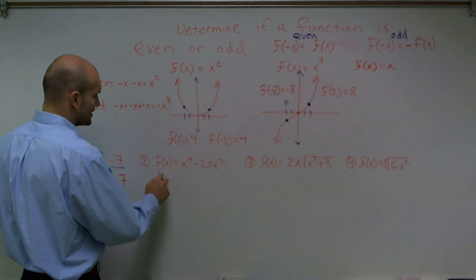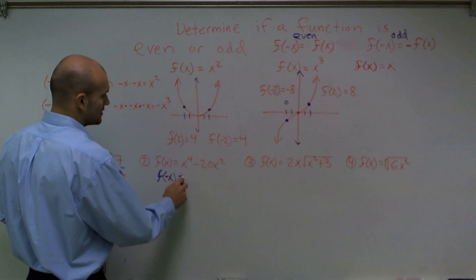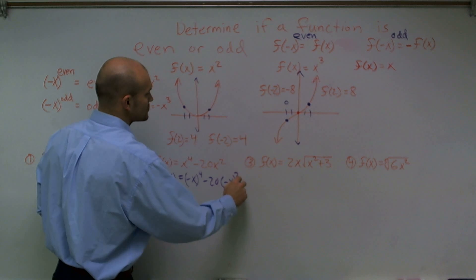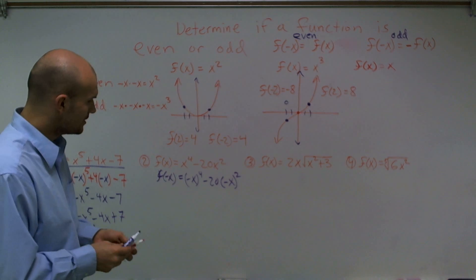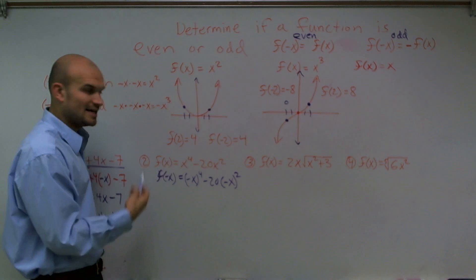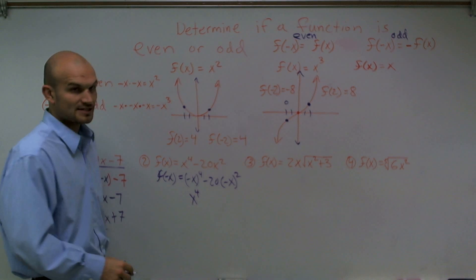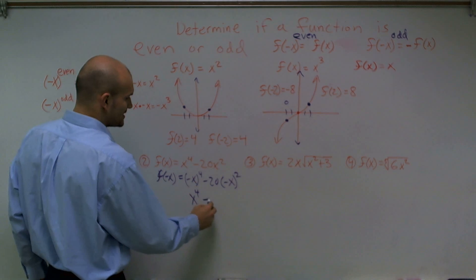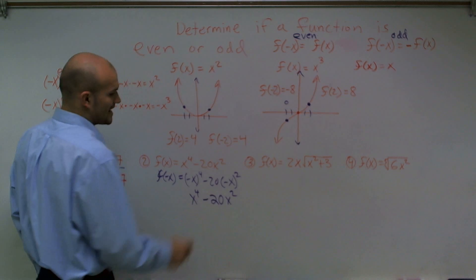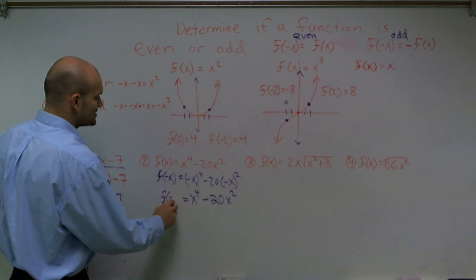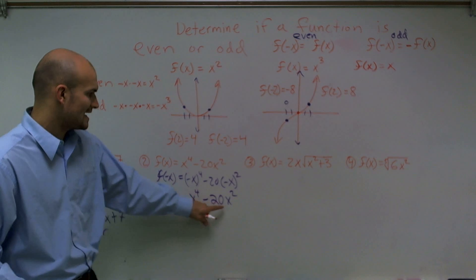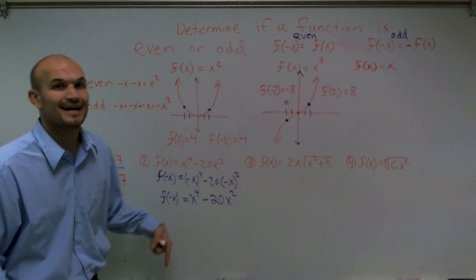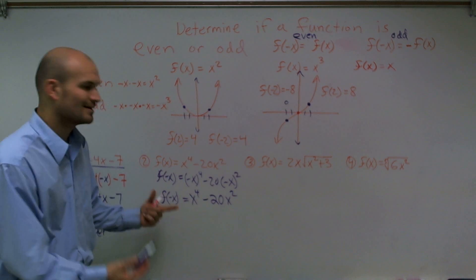Let's look at the next one. I'll plug in f of negative x, giving me negative x to the fourth minus 20 times negative x squared. A negative number raised to an even power always gives a positive result, so that gives me x to the fourth. Negative x squared also gives positive x squared, so that's negative 20 times positive x squared. I look at this result and ask: is this the same as my original function? Yes — it is the exact same output. When I plug in the new input and get the exact same output, it's an even function.